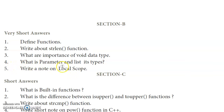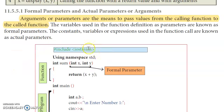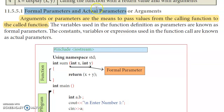Fourth question: what is a parameter and list its types? From page 192, arguments or parameters are the means to pass values from the calling function to the called function. There are two types: formal parameters and actual parameters.